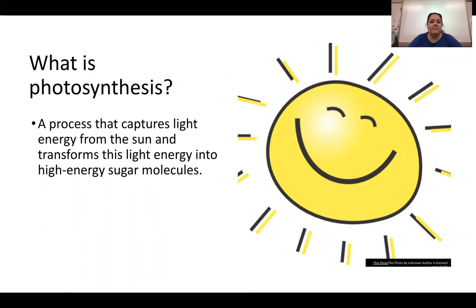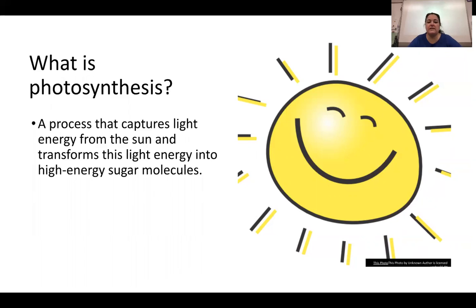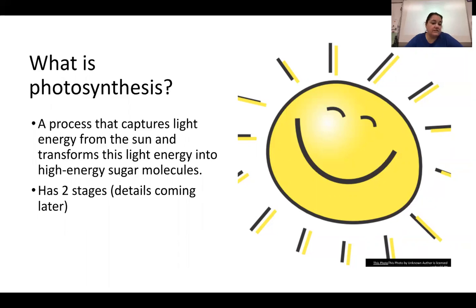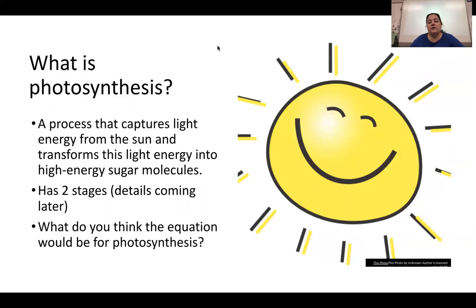What is photosynthesis? It is a process similar to cellular respiration, but it captures light energy. Instead of getting energy from glucose, we get energy from sunlight and transform that into glucose. So we're basically doing the opposite — making sugar. Photosynthesis has two stages, whereas cellular respiration has four.